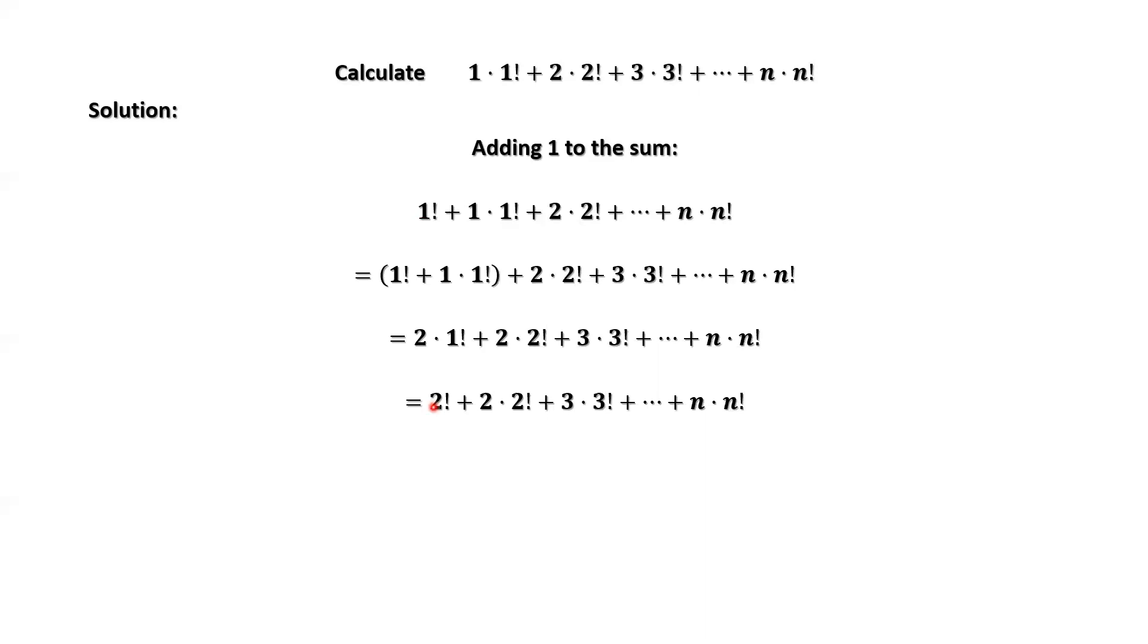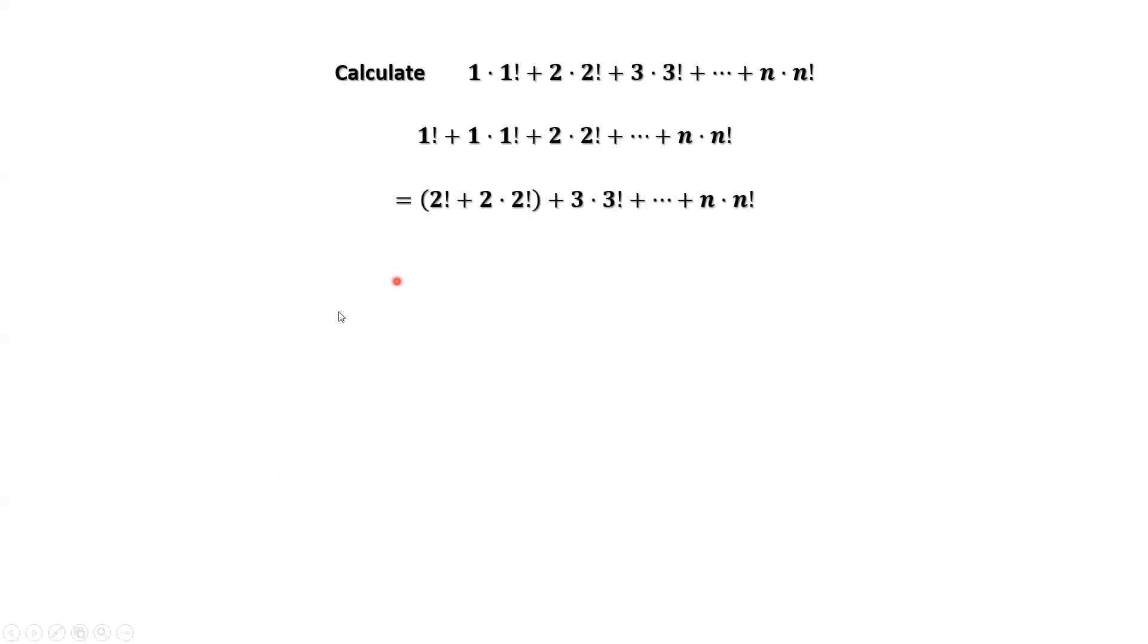Repeating the same idea, we group 2 factorial plus 2 times 2 factorial. Then we have 3 times 2 factorial.